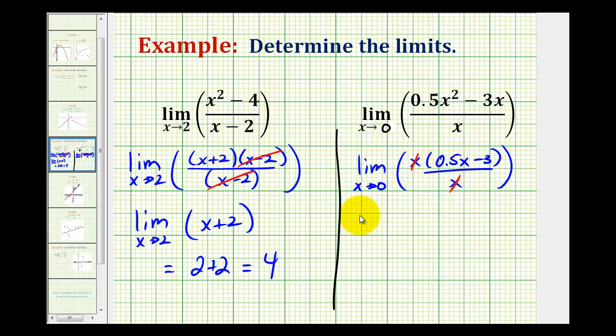So we can now determine this limit by performing direct substitution into the linear equation 0.5x minus 3. So if we replace x with 0, we would have 0.5 times 0 minus 3. So this limit is equal to negative 3.